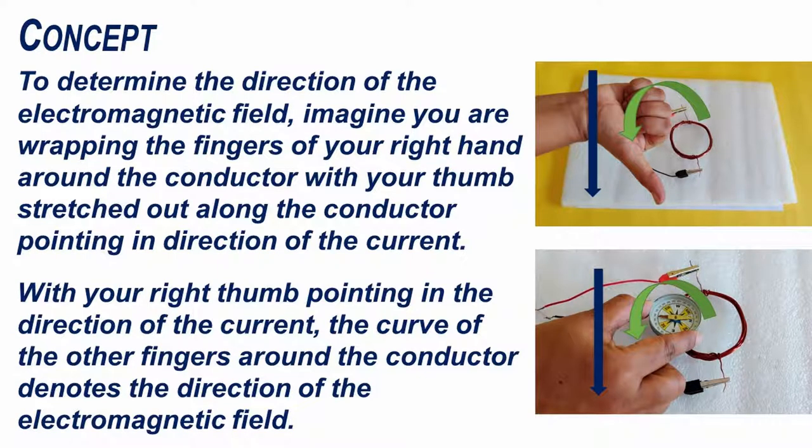To determine the direction of the electromagnetic field, imagine you are wrapping the fingers of your right hand around the conductor with your thumb stretched out along the wire or conductor pointing in the direction of the electric current.